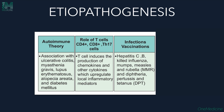Regarding the pathogenesis of Lichen Planus, we have certain theories. Firstly, the autoimmune theory says there is an association of Lichen Planus with other autoimmune diseases like ulcerative colitis, myasthenia gravis, lupus erythematosus, alopecia areata and diabetes mellitus. Secondly, there is a role of T-cells — CD4+, CD8+, and T-helper 17 cells — which play a role in pathogenesis. These T-cells induce the production of chemokines and cytokines which upregulate local inflammatory mediators and cause LP.